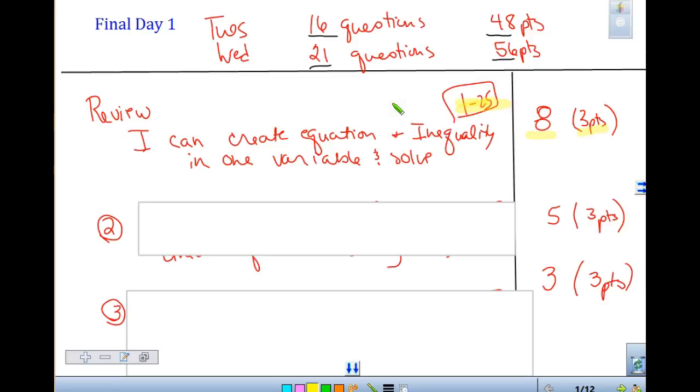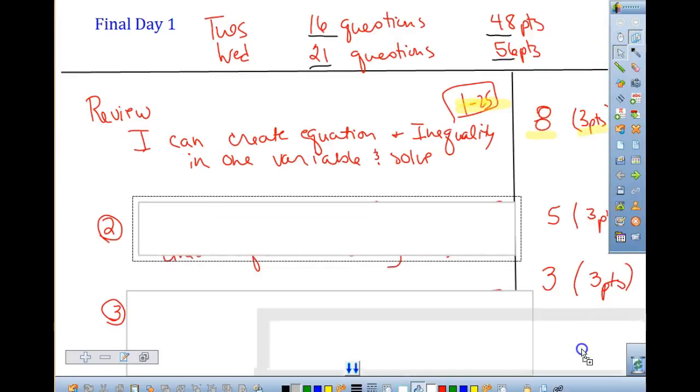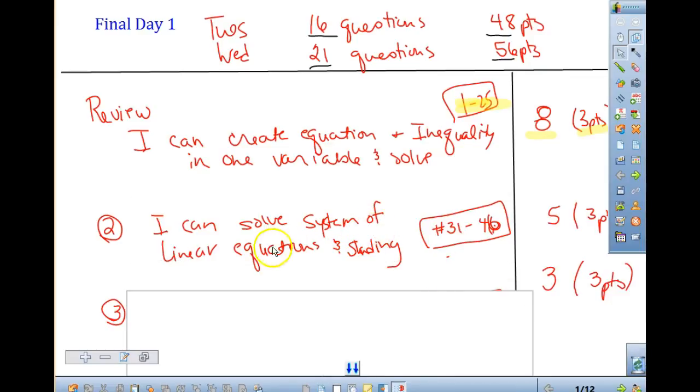The second standard, if you would please, turn to question 31. That's going to be the standard right above 31. So solving systems of linear equations and solving inequalities. So that's questions 31 to 46. This is in your review packet.